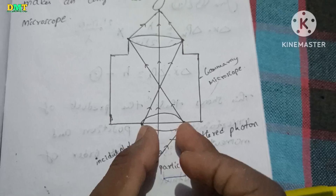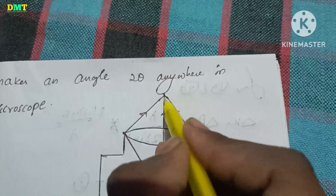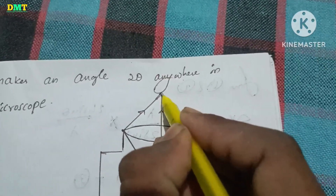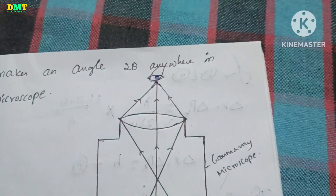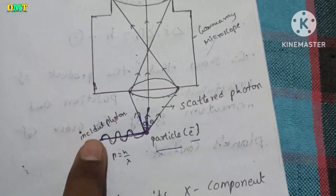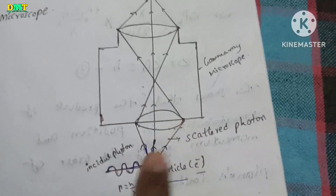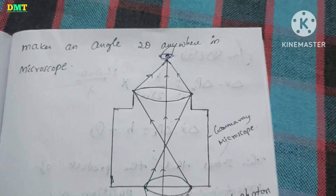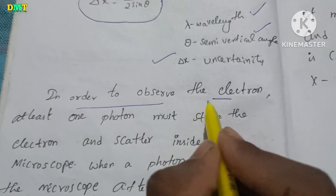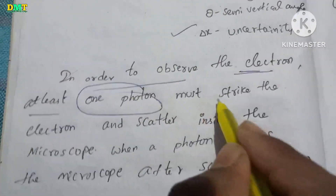If you look at the scattered photon, it is entering the gamma ray microscope and you will see the result. If you look at a photon, it is scattered in a different direction. In order to observe the electron, at least one photon must strike the electron.